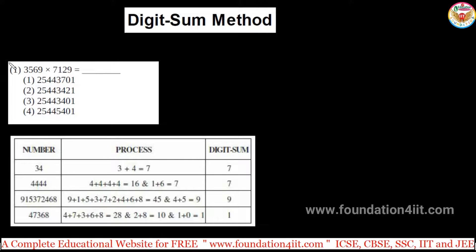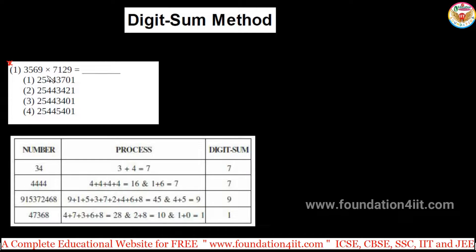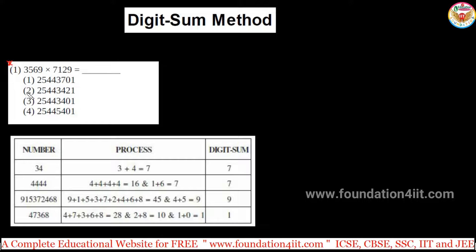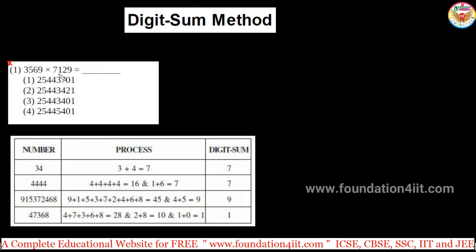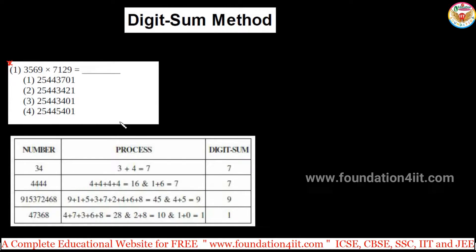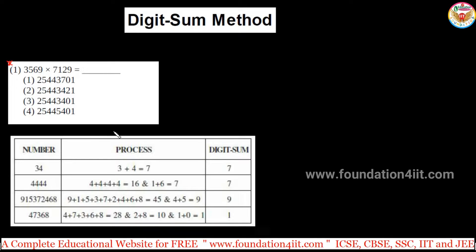Just one small example: 3569 multiplied by 7129. Without multiplying this out, which of the given options is the correct answer? This same approach works for multiplication, division, addition, subtraction, and even squares — to identify the answer directly.